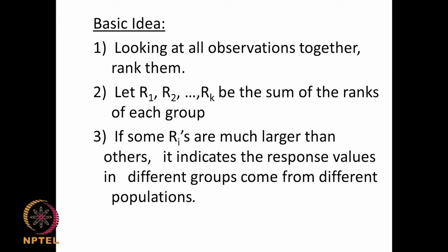What does it do? It looks at all the observations and ranks them. Once ranked, we sum up the ranks for each group — so we get summations R1, R2, R3. If some of these sums are larger than others, it indicates the response values in different groups come from different populations. We put all the data together, rank them in ascending order, sum up all the ranks for each group, and then compare these rank sums using a test statistic.